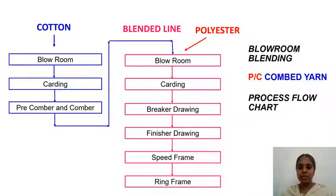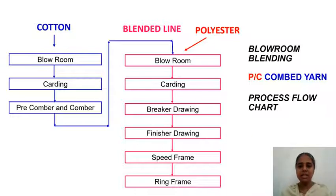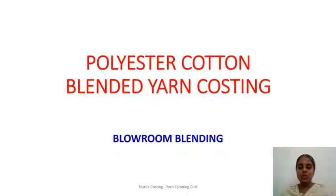The blended blow room line shown in pink will have open settings for blow room and carding, and there will be very less generation of waste compared to that of the cotton line. The cotton blow room line has similar settings to 100% cotton processing up to the pre-comber. After that, the blended blow room and carding will have very open settings as the material is very clean. The only need for this is uniform blending. Next, we will go into the costing for this blended yarn by blow room blending.